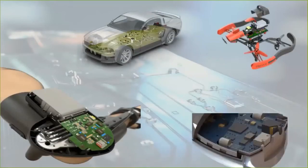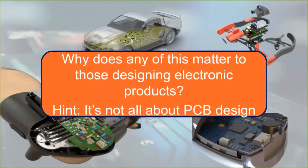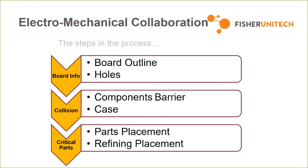Why might this matter to those designing electronic products? When you're in the space of PCB design, it's not all about the PCB itself — all these boards have an enclosure and a mechanical environment they have to operate in. When it comes to electromechanical collaboration, things like board outline, mounting hole locations, collision information with components or the casing, and critical part placement are all the mechanical designer's responsibility. The problem is he's responsible for these things but cannot directly influence any of them — he has to create secondary documentation that then gets recreated on the PCB design side. The question is: is there a better way? Our answer is SOLIDWORKS PCB.